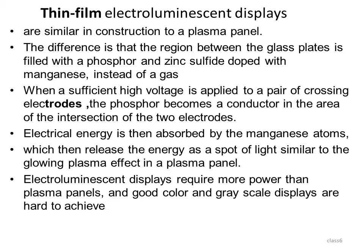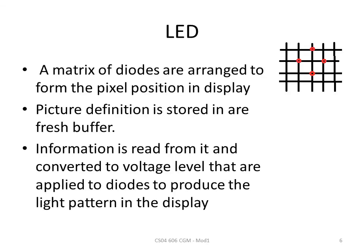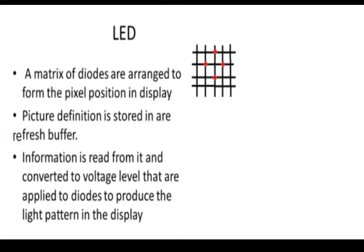The next type is LED display. LED diodes are arranged at each pixel position. A matrix of diodes is arranged to form pixel positions in the display. The picture definition is stored inside a refresh buffer, and the information is read from it and converted into voltage level data applied to the diodes to produce a light pattern in the display.